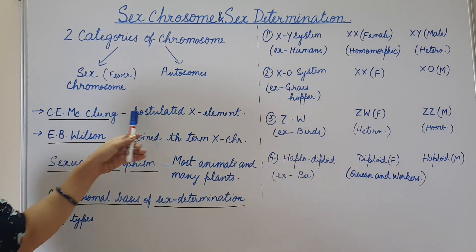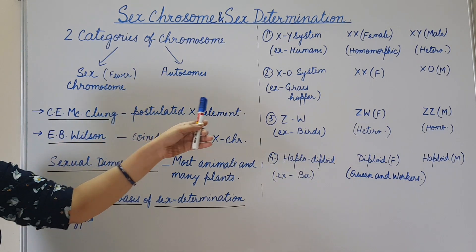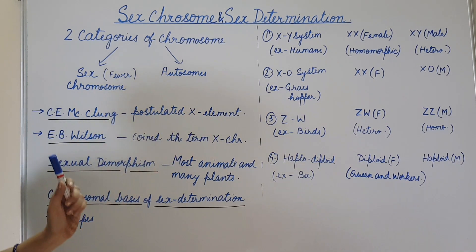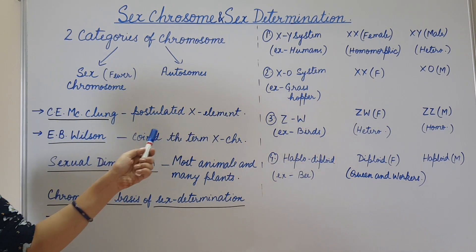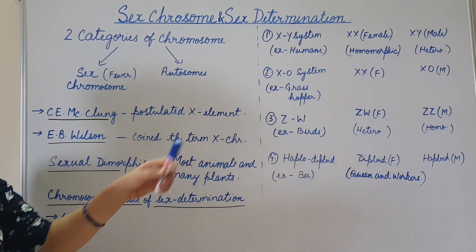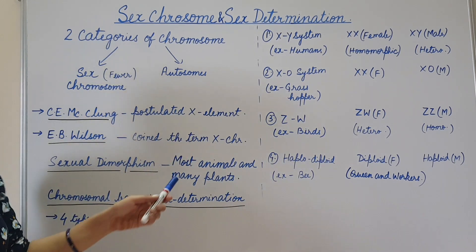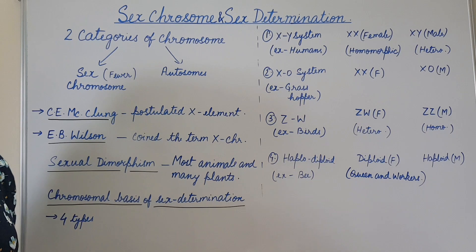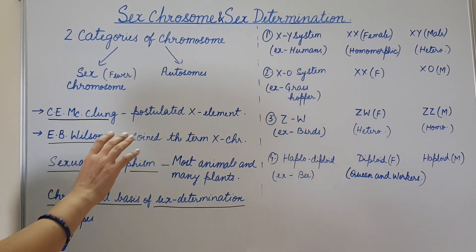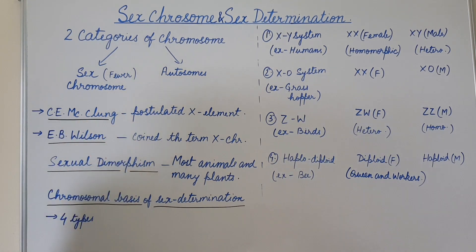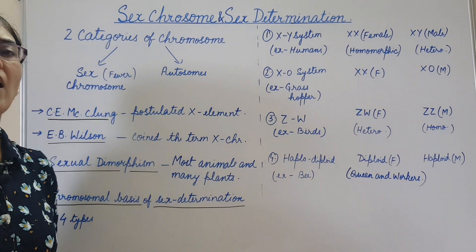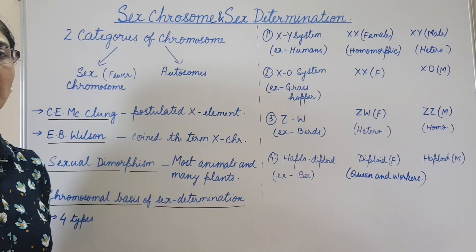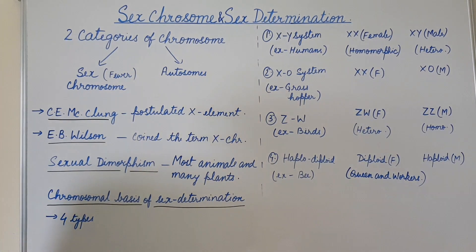C.E. McClung postulated the X element. E.B. Wilson coined the term X chromosome. Most animals and plants show sexual dimorphism, meaning individuals are either male or female.